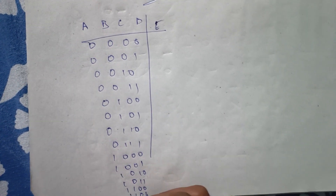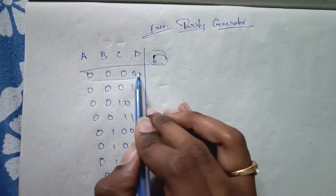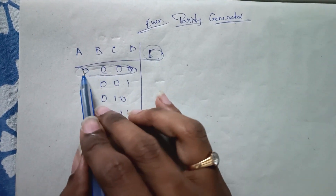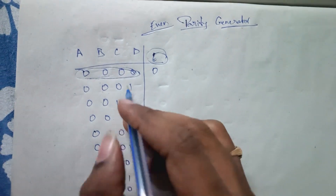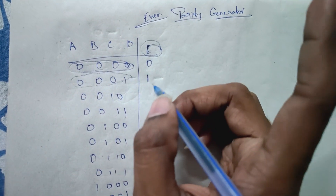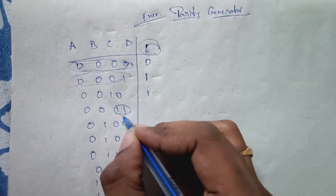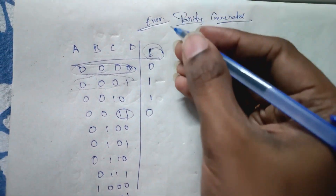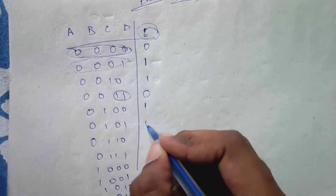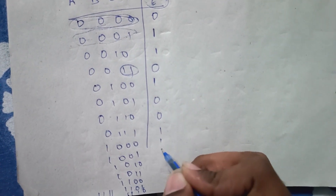Finally, 1 1 1 1. The even parity is decided based on the number of ones present in the input. If there are zero ones — that is, all inputs are 0 — the even parity output is also 0. If there is one '1', that is an odd count, so we add 1 to make the total count even. If there are two ones, that is already even, so we add 0. In this way the entire parity column is filled: 0, 0, 1, 1, 0, and so on.